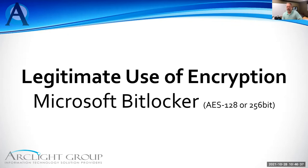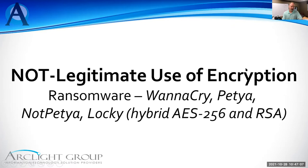Legitimate use of encryption: Microsoft BitLocker uses AES 128-bit or 256-bit encryption — every computer in your organization should have it turned on. It really costs nothing as long as you have modern computers with a TPM chip. Not legitimate use: ransomware. There are many names — WannaCry, Petya, NotPetya, Locky — and they use hybrid AES-256 and RSA encryption. They'll encrypt their attack as well as the data on your system, making it very hard to figure out exactly what happened.